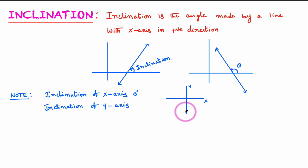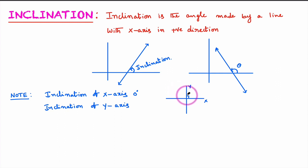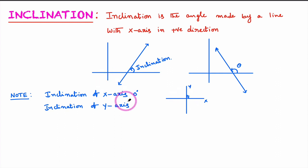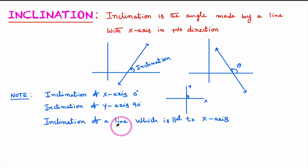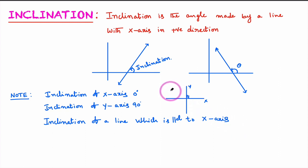Now, inclination of the y-axis. This is the y-axis — what is the angle made by the y-axis with the x-axis in the positive direction? We know that this angle is 90 degrees, so the inclination of the y-axis is 90 degrees.